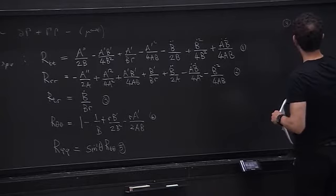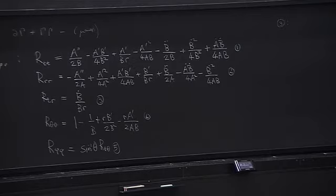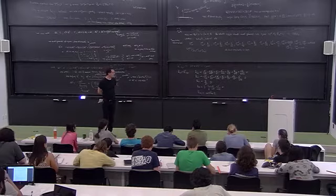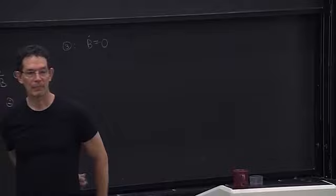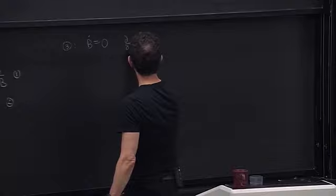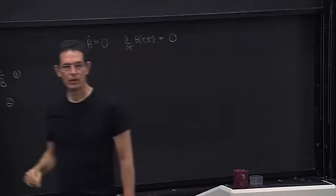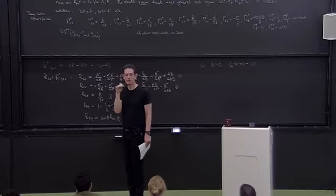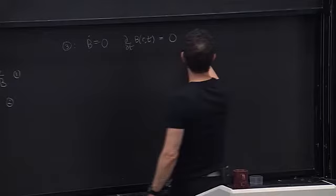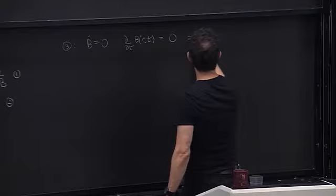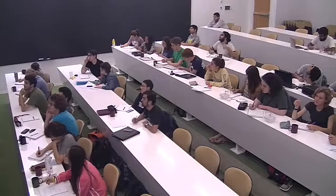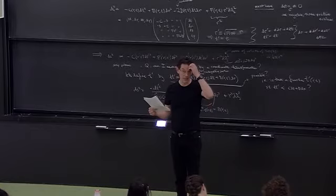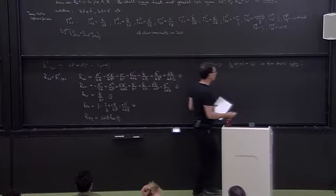Equation three — the R-TR component — is the easiest to solve. That quantity has to be zero for the Einstein equations, and it tells us that b-dot equals zero. That means d/dt of B(r,t) equals zero, so B is only a function of r. So B equals B(r) only. Einstein equations just don't allow B to depend on time — that's the first hint that the solution may be static.